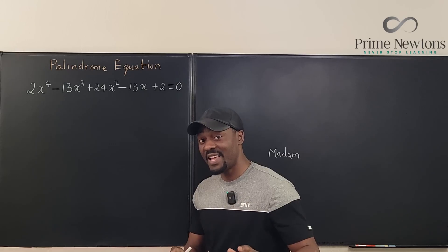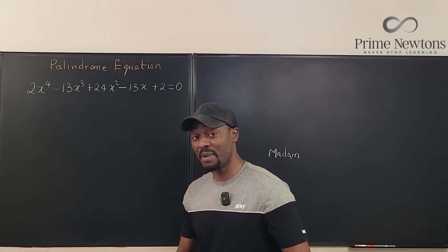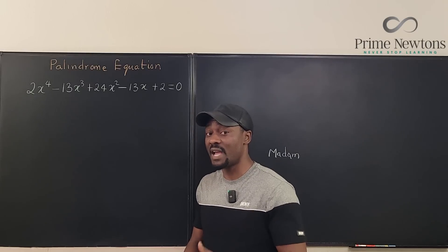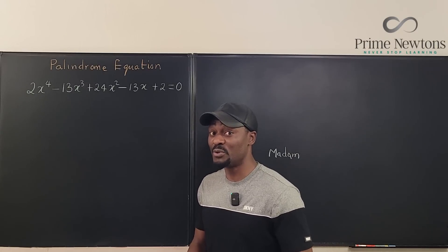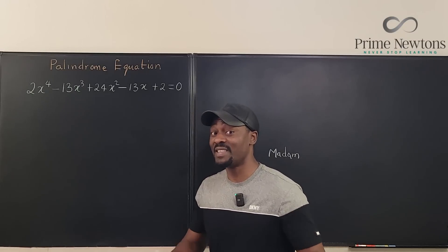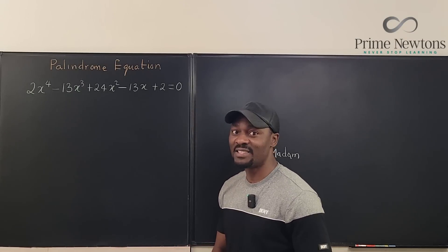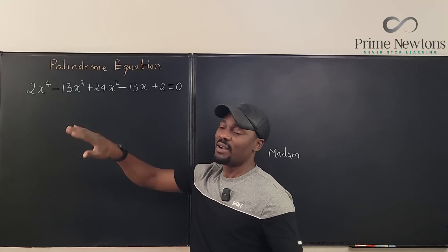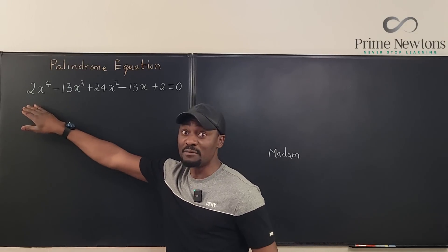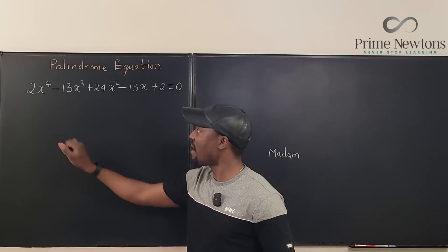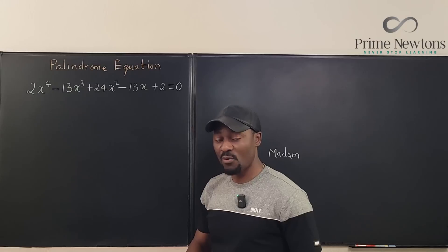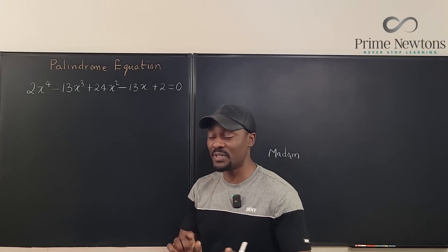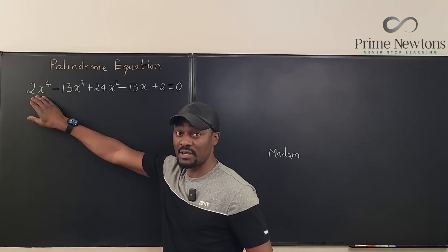This is not the only way to solve palindrome equations but it is the best way, because you don't have to do trial and error, you don't have to use the rational root theorem, you don't have to do synthetic division. You just look at it — and it is always most effective when you have a fourth degree polynomial, because what you end up solving is a quadratic or a bunch of quadratics.